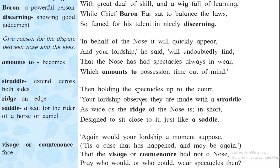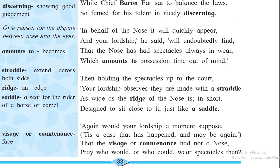See here in the fourth paragraph: 'As wide as the ridge of the nose is, in short designed to sit close to it just like a saddle.' Here a direct comparison is made — they are saying the spectacles are prepared so that they fit on the ridge of the person's nose, just as a person becomes comfortable on a saddle while riding. So a direct comparison is made between the ridge of the nose and a saddle. The figure of speech simile is used here.